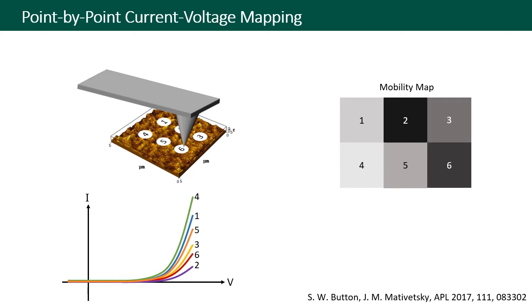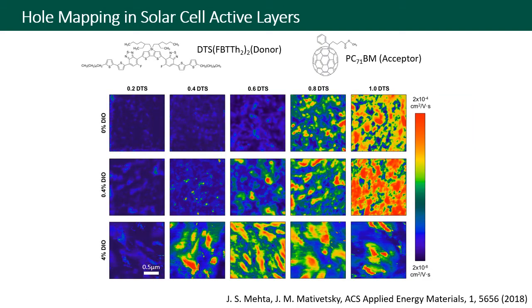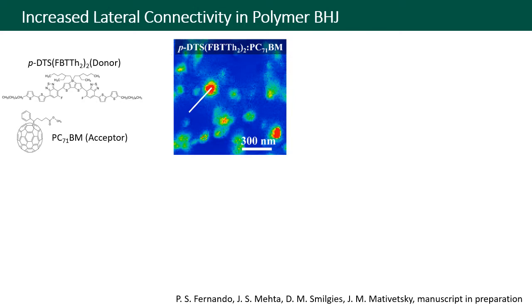Local photovoltaic parameters can also be spatially mapped with nanoscale resolution. We've used this point-by-point IV approach to track the dependence of local hole mobility in organic bulk heterojunctions. For a small molecule bulk heterojunction, the hole mobility and conductive domain size generally increase with the amount of donor component and with the addition of DIO that promotes donor-acceptor phase separation.